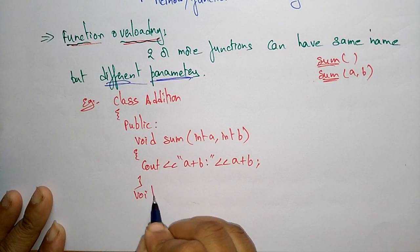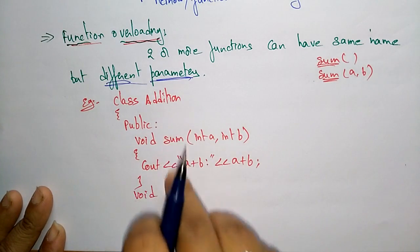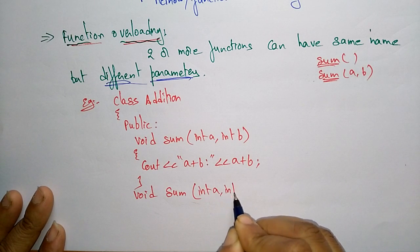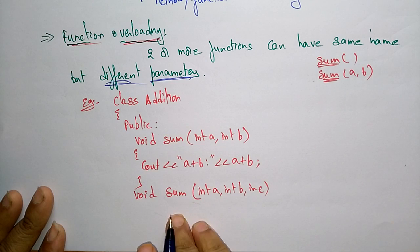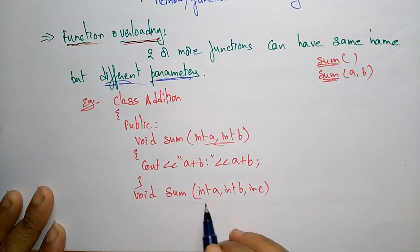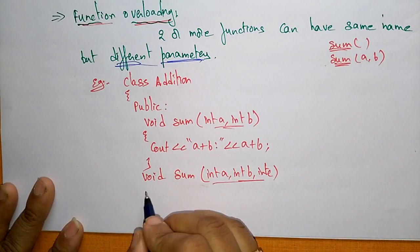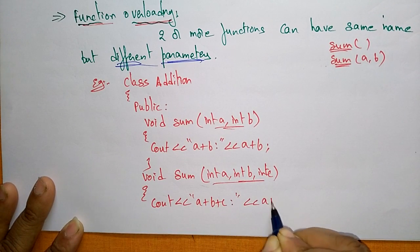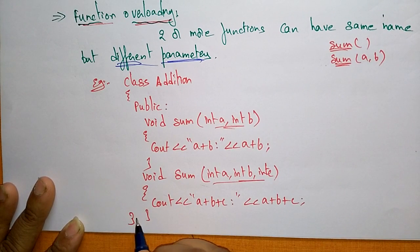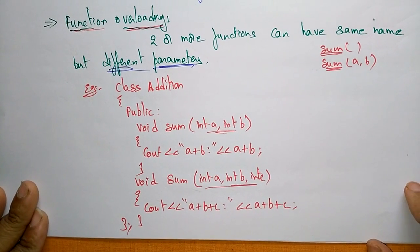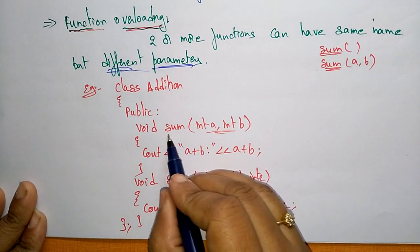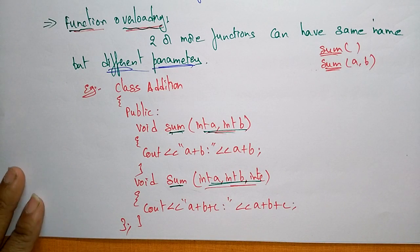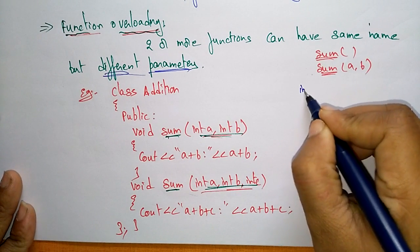Here I'm taking another function with the same name — void sum — in the same class. This is function overloading: two functions with the same name but different parameters. This second function takes three parameters: int a, int b, int c, and prints a plus b plus c. This is class 'addition'. Two or more functions having the same name 'sum' but with different parameters — that is function overloading. Now I'm writing the main function.